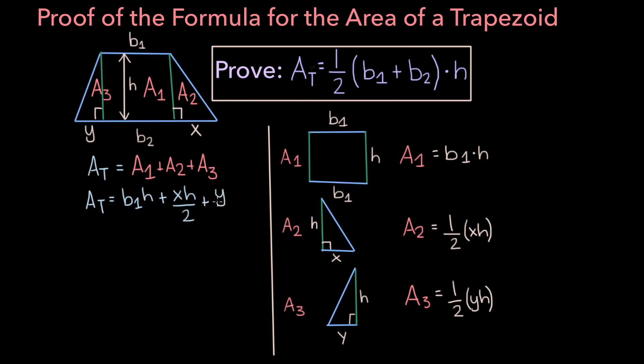We can rewrite this as b1h plus x plus y times h over 2, where I've just factored out the common h over 2 in these last two terms.